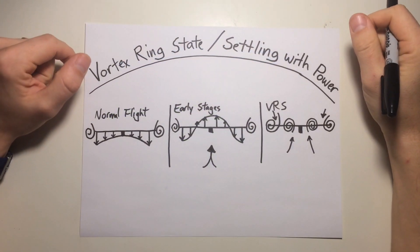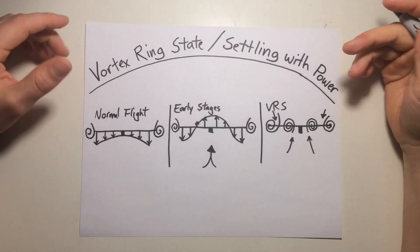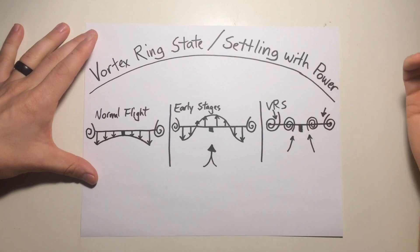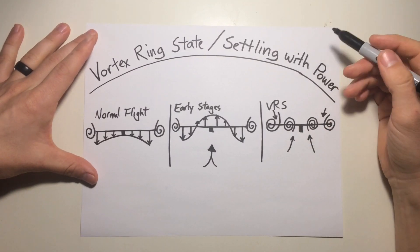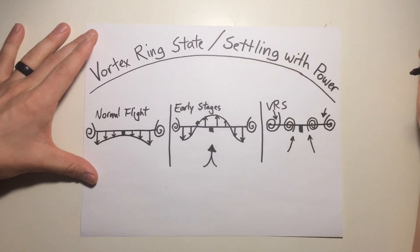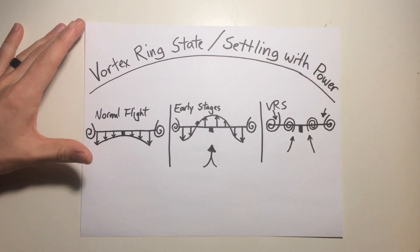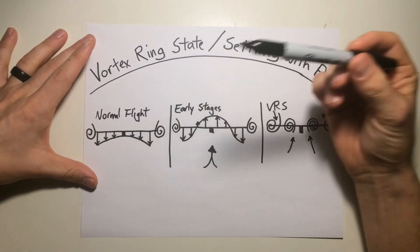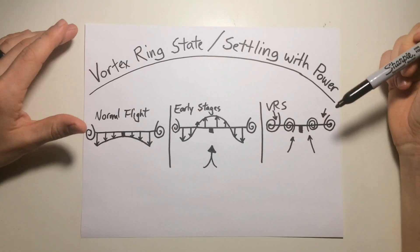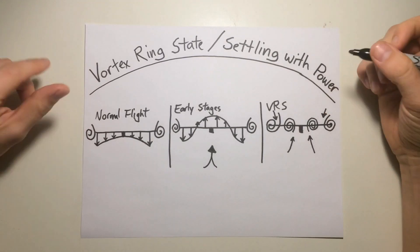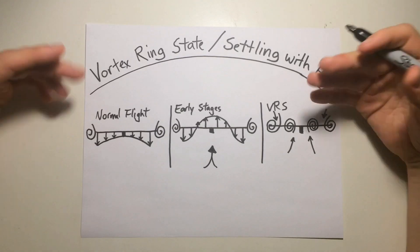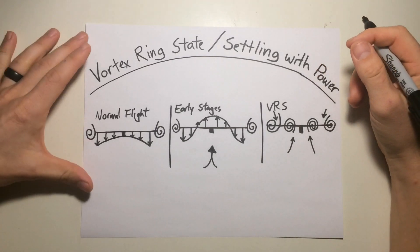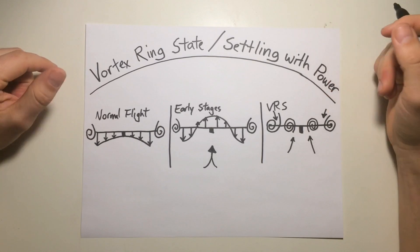Welcome back to Helicopter Lessons in 10 Minutes or Less. It's Jacob again. This is part two of the vortex ring state, slash settling with power video. In the first video, we talked about what exactly is a vortex ring state, what is settling with power, the definitions, what it looks like on your rotor system in normal flight, early stages, and the vortex ring state. In part two, we're going to go over the three requirements for settling with power, the conditions that are conducive to it, as well as the recovery from settling with power.